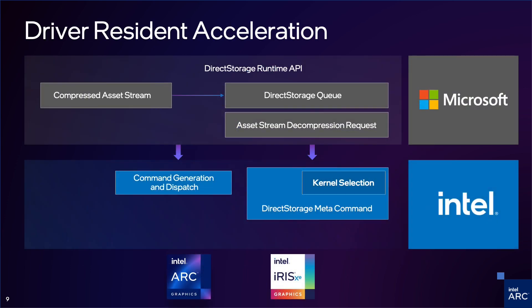Here we take a closer look at the relationship between the Direct Storage Runtime API and Intel's D3D12 driver. The Direct Storage API communicates with the D3D12 driver by using a set of functions and structures defined in the Direct Storage API header files. When an application requests data from the storage device, Direct Storage uses the appropriate APIs to communicate with the D3D12 driver and retrieves or writes the data to the GPU memory. The Direct Storage API also provides functions for managing GPU memory and synchronizing the data transfer between the storage device and the GPU, providing a simple and efficient way for applications to access storage devices and transfer data through the D3D12 driver.